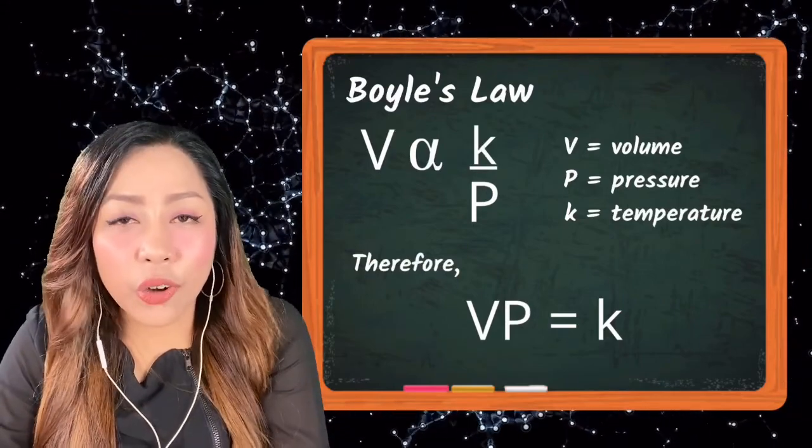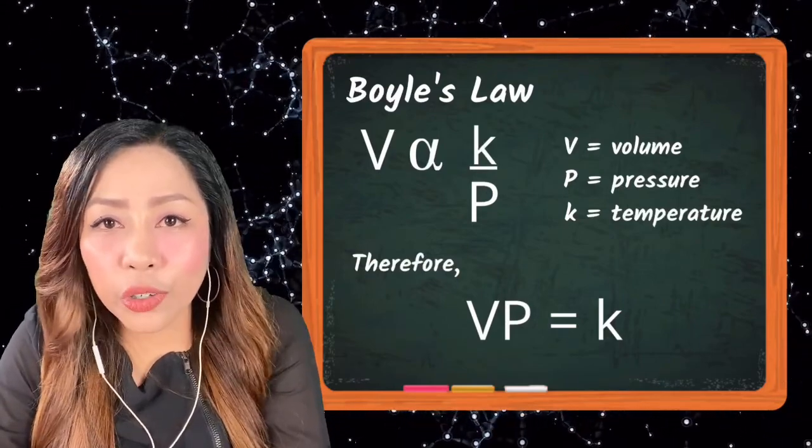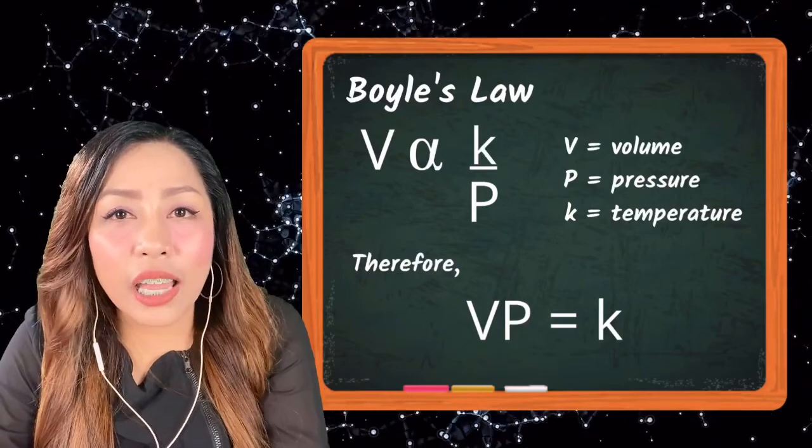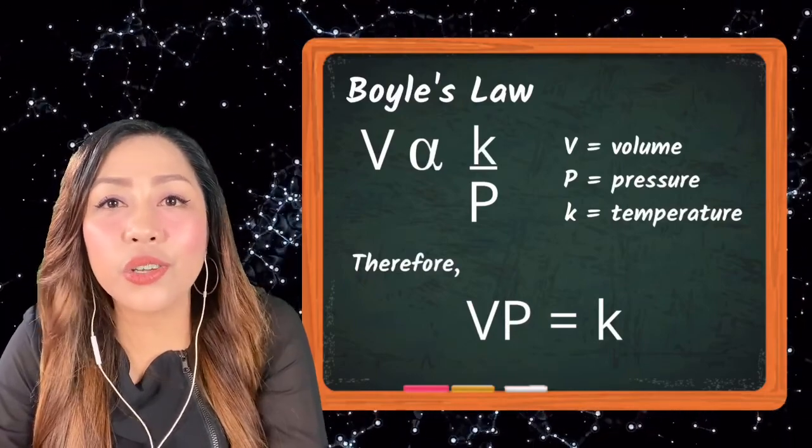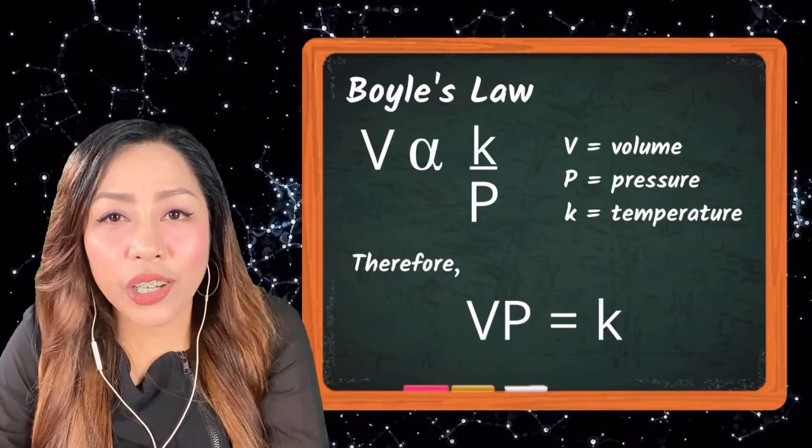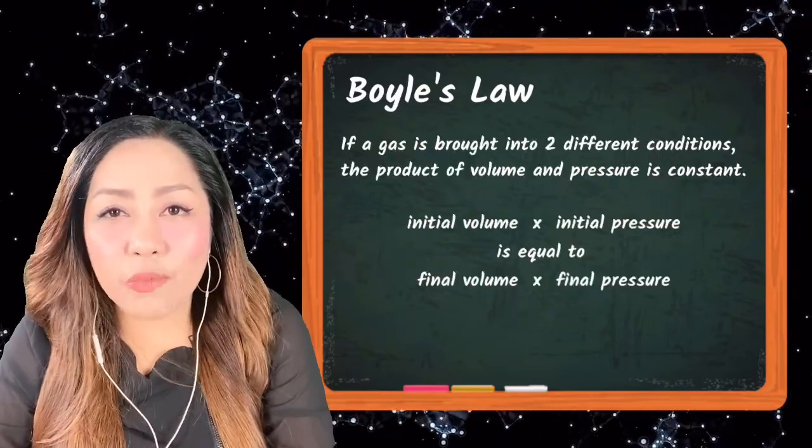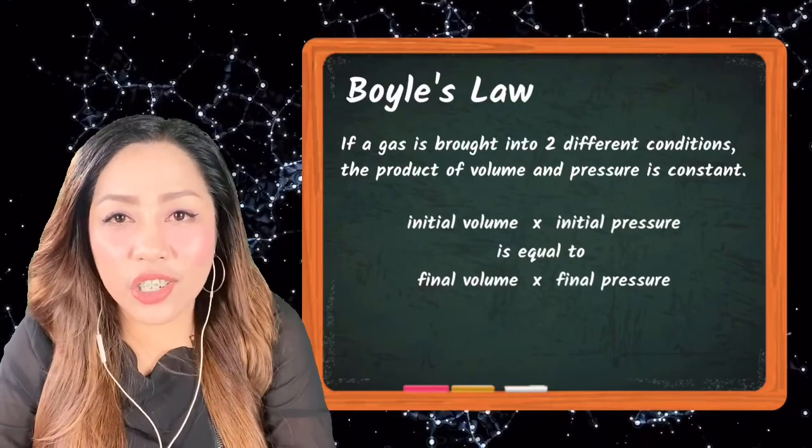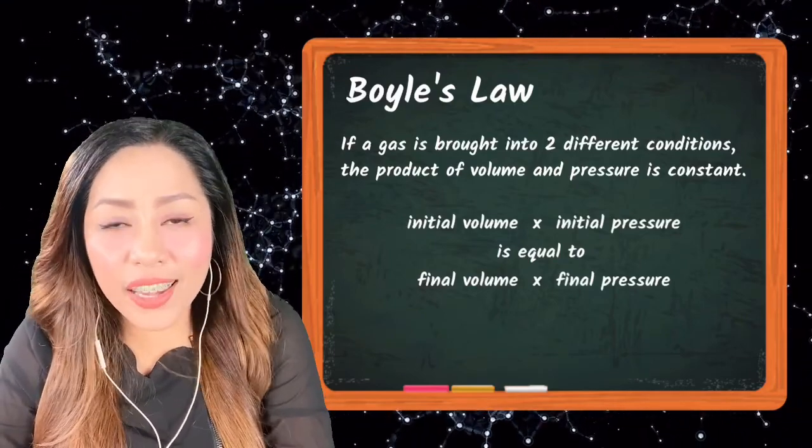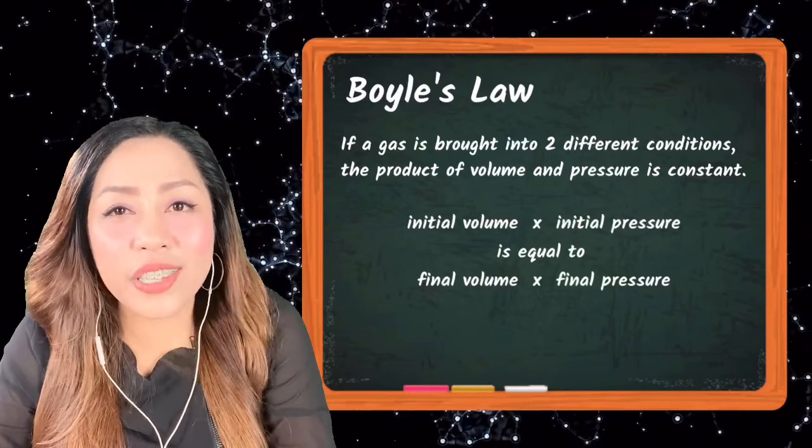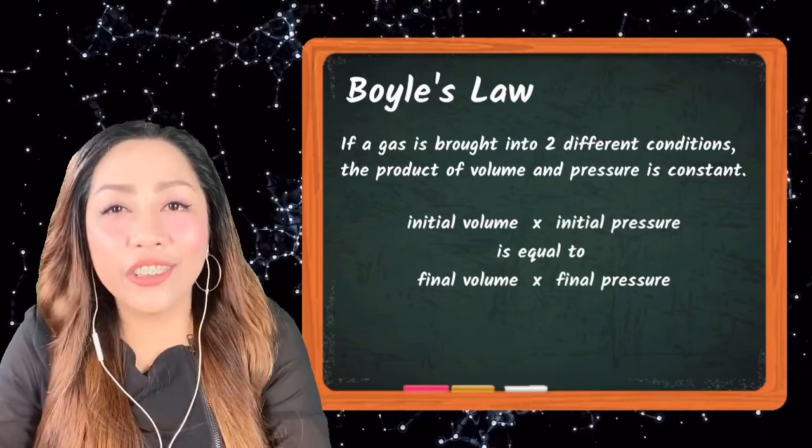Now, when we cross-multiply volume and pressure, we'll have V times P equals to K, which is our constant. What does this mean? If a gas is brought into two different conditions, the product of its volume and its pressure is always going to be constant.